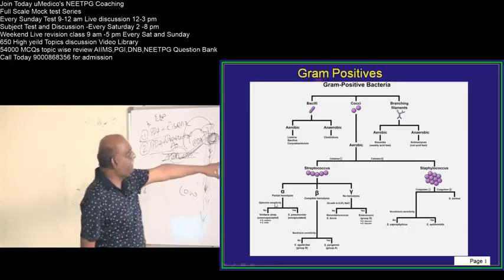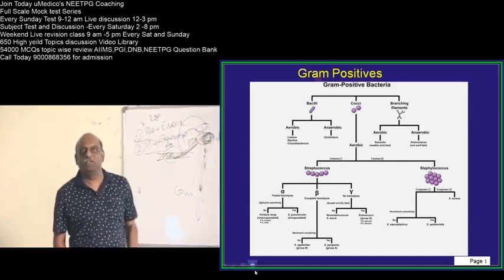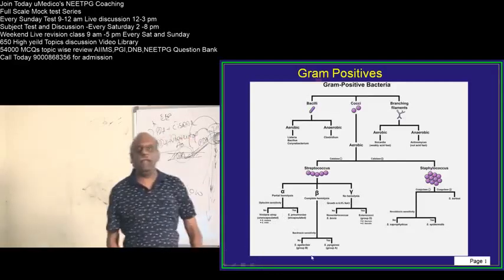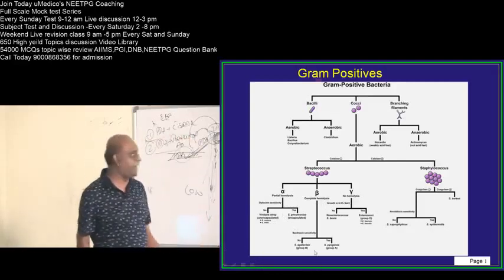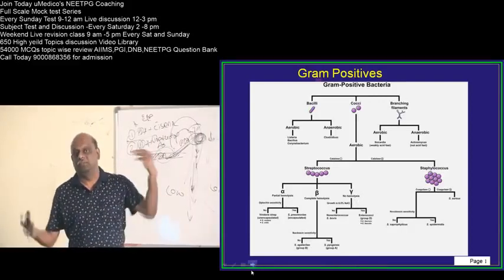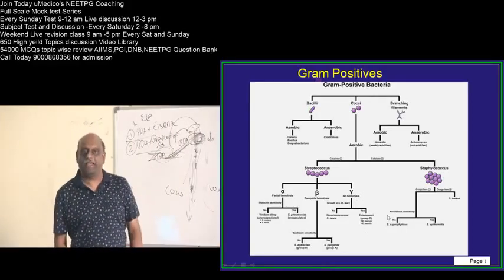Come on, summarize, how do you differentiate alpha hemolytic organisms? Optochin sensitivity, is what you need to remember. Beta hemolytic, bacitracin sensitivity differentiates. Gamma hemolytic, the differentiator is 6% NaCl, can it grow or not?